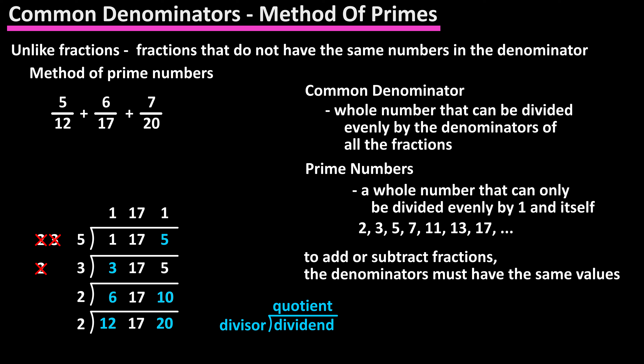Next we are going to put the new quotients of 1, 17, and 1 as the dividends, and again start with the smallest prime number of 2 and work our way through the prime numbers. The first one we come to that can be divided evenly by any of the dividends is 17. So we will put 17 as the divisor, and put the new quotient above the given dividend. 17 divided by 17 equals 1, and for the other two dividends, which are not evenly divisible by 17, we again just bring those up to the quotients.